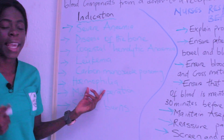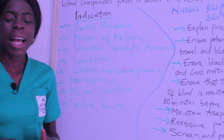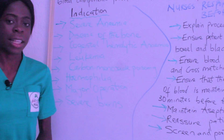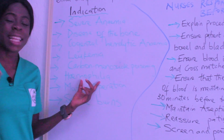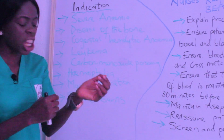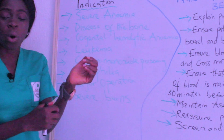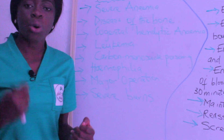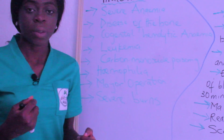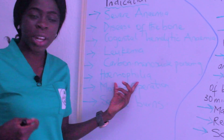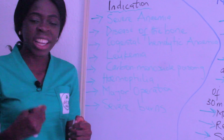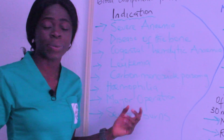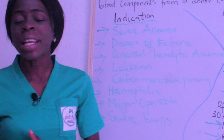Hemophilia is a blood clotting disorder where platelets are lacking. When a child with hemophilia sustains even a small cut, there is excessive bleeding because of a problem with the clotting factor. Hemophilia is therefore also an indication for blood transfusion.